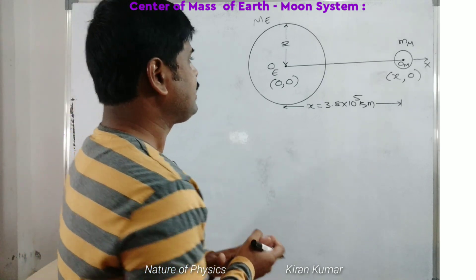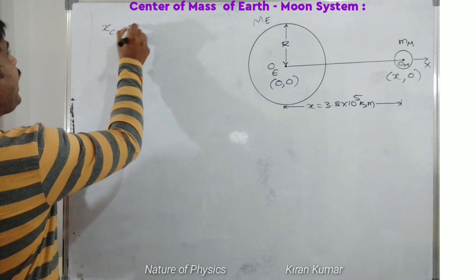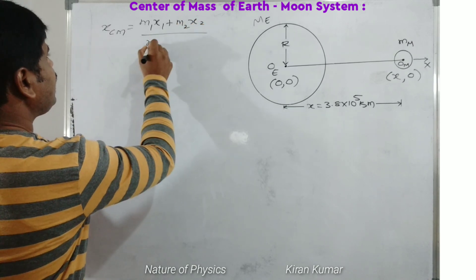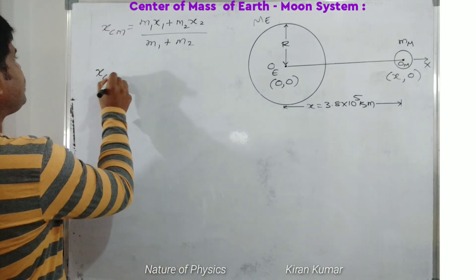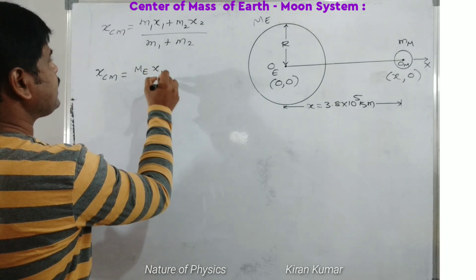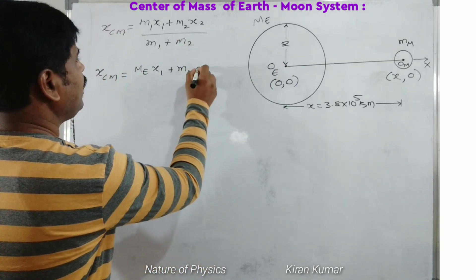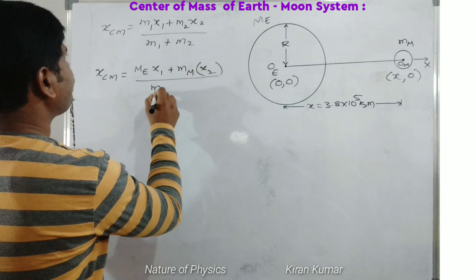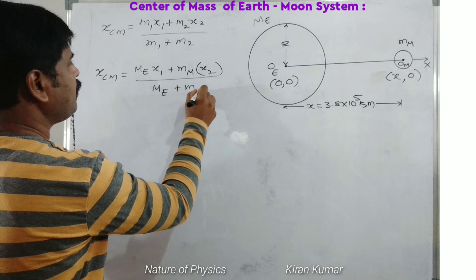According to the center of mass formula, xcm = (m1·x1 + m2·x2) / (m1 + m2). Here, m1 is taken as the mass of the Earth Me with position x1, and m2 is the mass of the Moon Mm with position x2, divided by Me plus Mm.